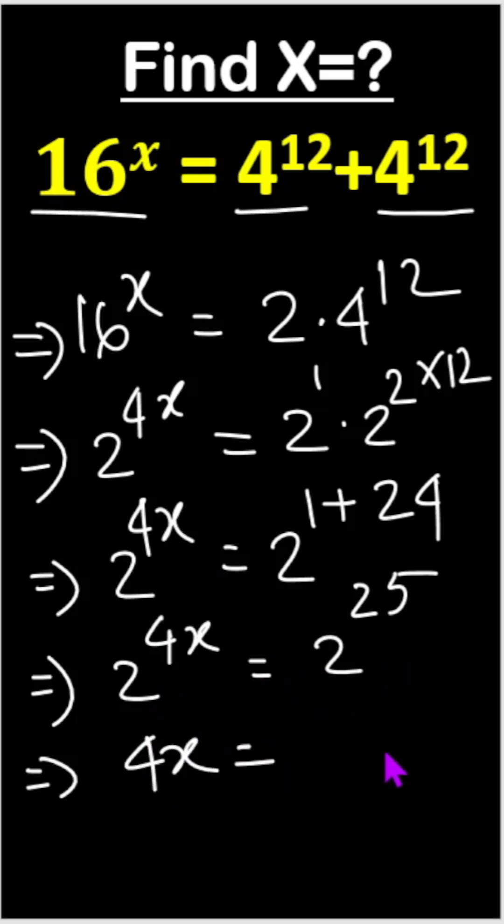So 4x equals 25. Now we can divide both sides by 4. So x equals 25 by 4.